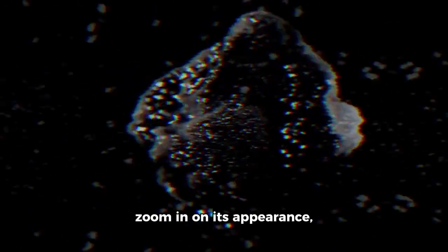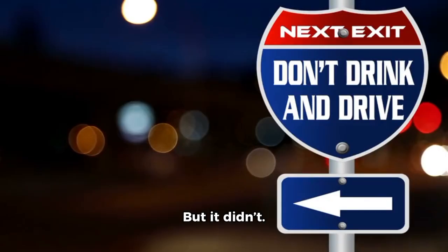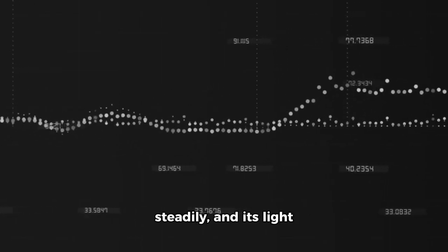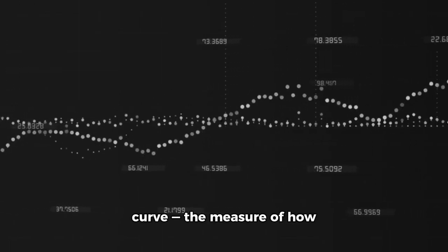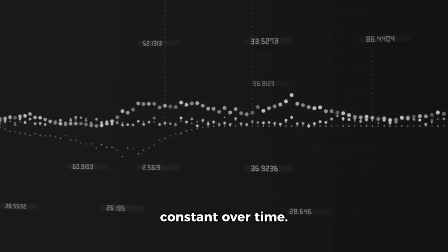Let's zoom in on its appearance, because 3i Atlas isn't just massive, it's visually bizarre. When it was first detected, it appeared brighter than expected for an object of its size, leading some to speculate it might be fragmenting under the sun's intense heat, but it didn't. Instead, its brightness stabilized, its coma grew steadily, and its light curve, the measure of how its brightness changes, remains strangely constant over time.